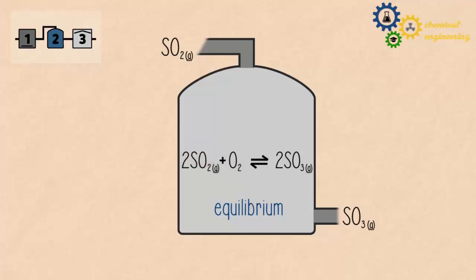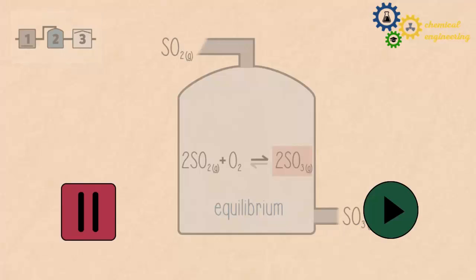What can be done to this process to speed it up and to force the equilibrium into forming more sulphur trioxide? Pause the video and continue when ready.